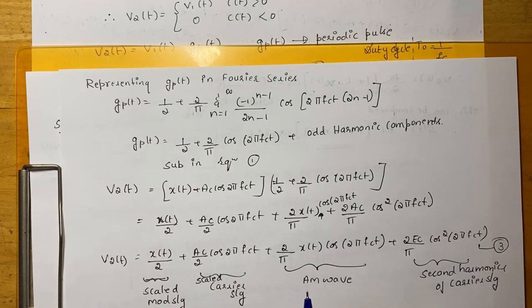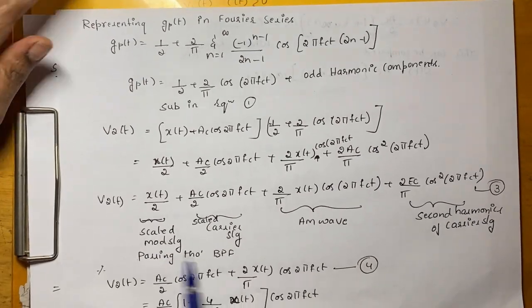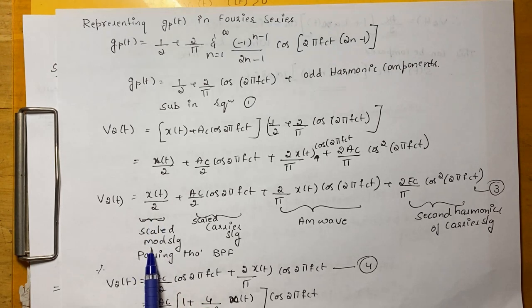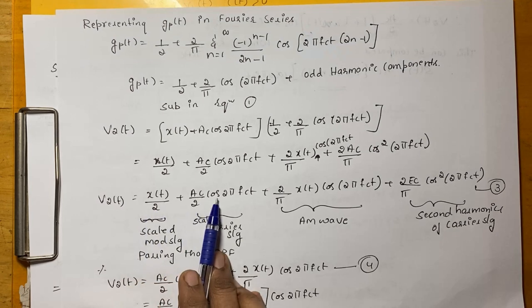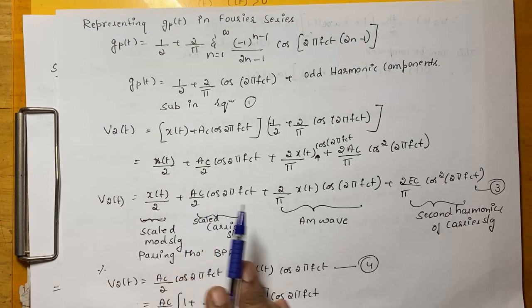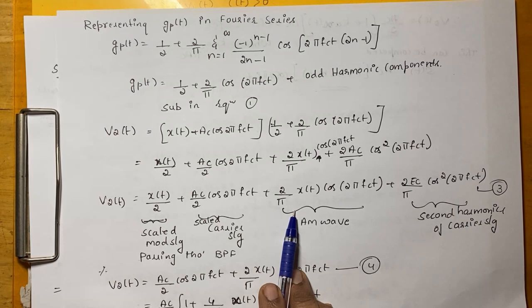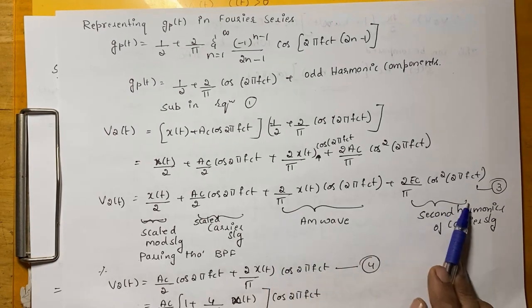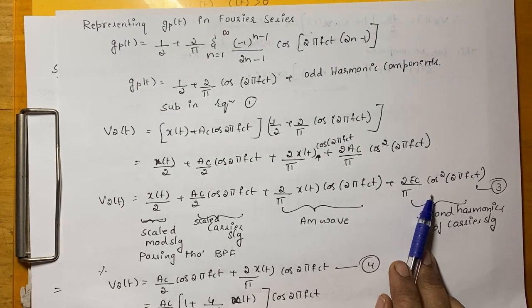Once we observe this equation, here V2(t) = X(t)/2 which is nothing but a scaled version of modulating signal. And next one is AC/2 cos(2π FcT) is again the scaled carrier signal. And here we are having a required AM wave with sidebands. And the last term is nothing but a second harmonics of a carrier signal.